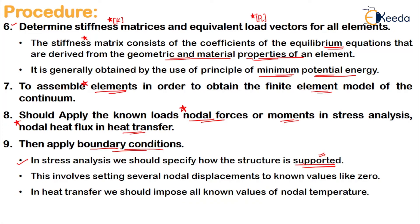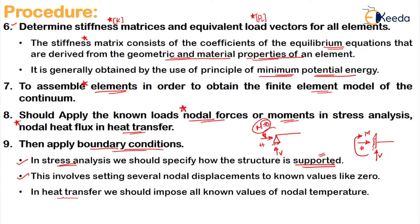Applying support conditions involves giving nodal displacements to known values like zero. For example, if it is a fixed support, nothing will be zero because it will have horizontal reaction, vertical reaction, and moment. If you give the support as a hinge, the rotational value M will be equal to zero, indicating a hinge support. In heat transfer analysis, we should impose all known values of nodal temperature at each node.